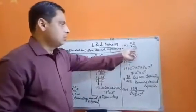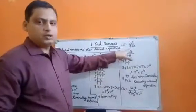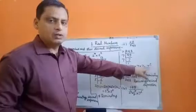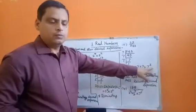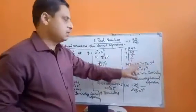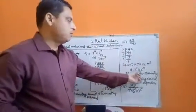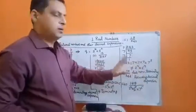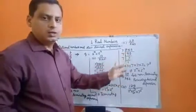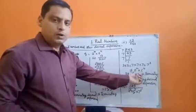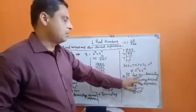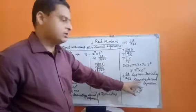Therefore 13 upon 3125 also has a terminating decimal expansion. The third example is 21 upon 343. The denominator is 343. Factorization of 343 is 7 × 7 × 7, which is 7 power 3. It has no factors other than 7, so it is not of the form 2 power m into 5 power n. By the fundamental theorem of arithmetic, prime factorization is always unique. So it is not of the form 2 power m into 5 power n, therefore 21 upon 343 will have a non-terminating recurring decimal expansion.